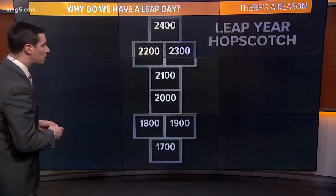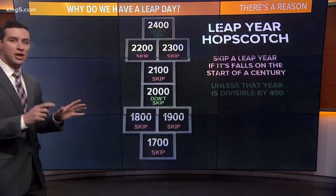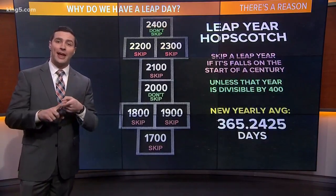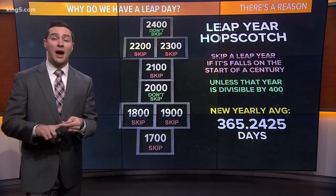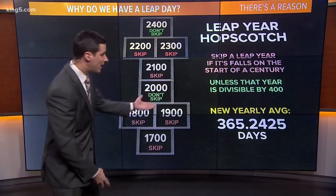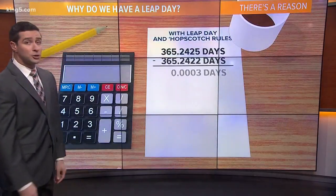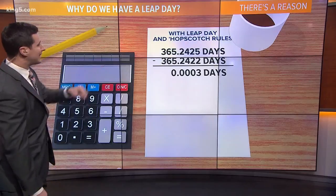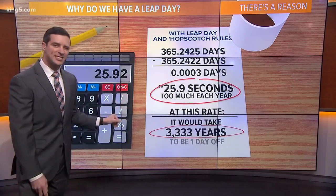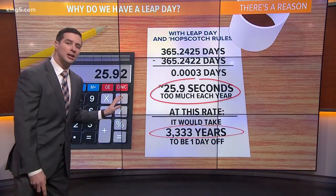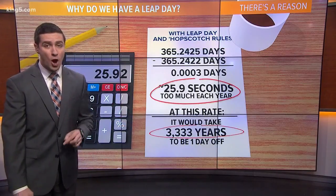There's one more thing that's in place, something called leap year hopscotch, and this is how it works. We actually skip a leap year if it falls at the start of the century, unless that year is divisible by 400. And with that in place, this is our new yearly average, which is a lot closer than with just leap days. So with leap day and hopscotch rules, our calendar is still off by 26 seconds every year, but at this rate it would take over 3,000 years to be one day off.